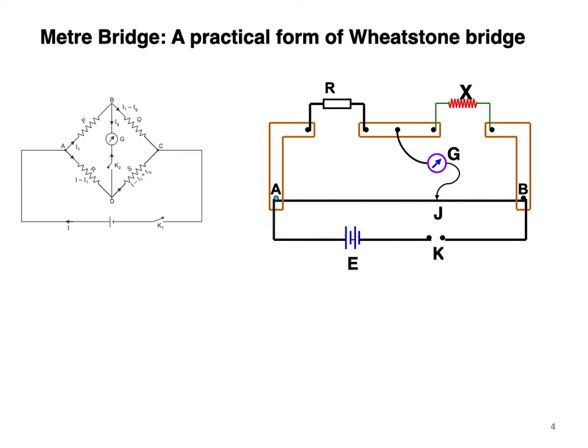draw any current. Here P is replaced by R. We have a resistance R on this side, we have resistance X, and then these two arms are the resistance of wire AJ and resistance of wire JB. So we have the same principle: P/Q = R/S, or P/Q = resistance of AJ / resistance of JB.